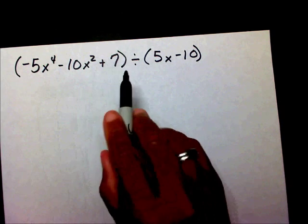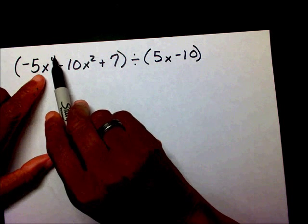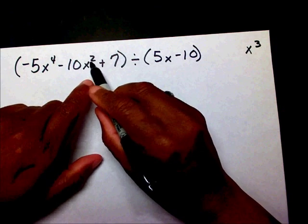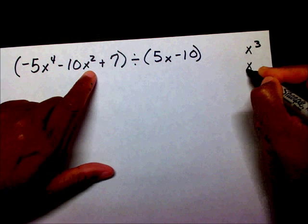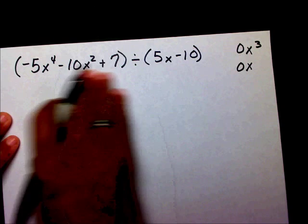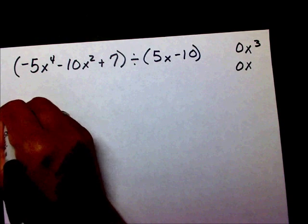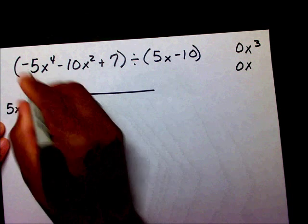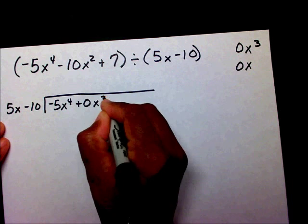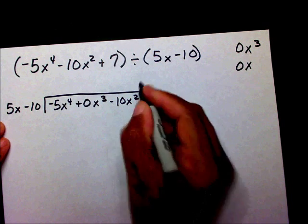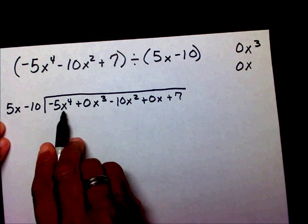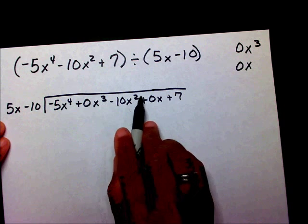If I look at this polynomial, I have x to the 4th and x to the 2nd, so I'm missing x to the 3rd. I have x to the 2nd but then I have my constant, so I'm missing my x. So I'm going to include 0x to the 3rd and 0x in this polynomial. I have 5x minus 10, and I have negative 5x to the 4th plus 0x cubed minus 10x squared plus 0x plus 7. My exponents are in descending order: x to the 4th, x to the 3rd, x to the 2nd, and x.